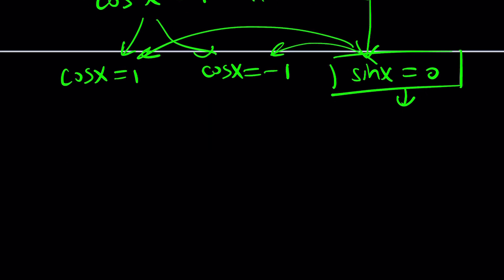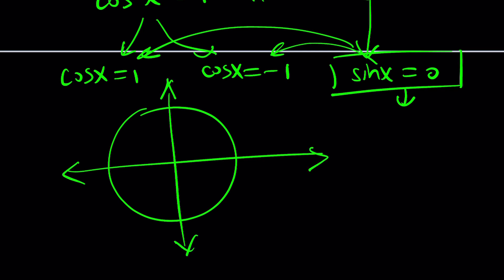So what does sine x equals 0 mean? If you think about the unit circle, which is super important, then you probably know that sine x is going to be on the y-axis. So this is the y-axis. So when sine is 0, we're basically here or here. In other words, either 0 or π or negative π or 2π.